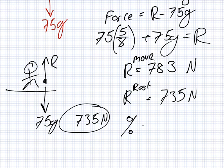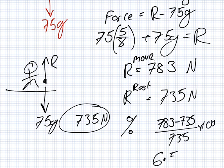Do you know how to get the percentage difference? No. Ah, come on. Your middle school teacher will be so sad now. 783 minus 735 over 735 times 100. So, the percentage is 783 minus 735 over 735 times 100. Which is 6.5%.